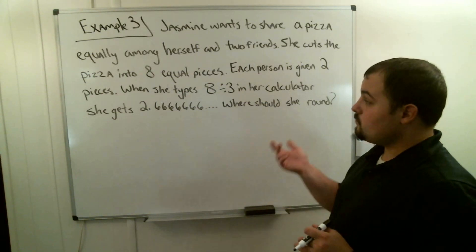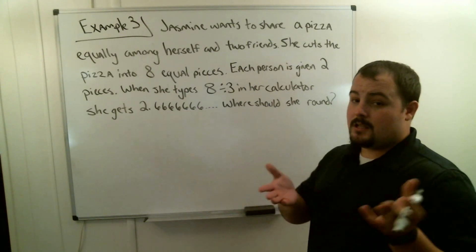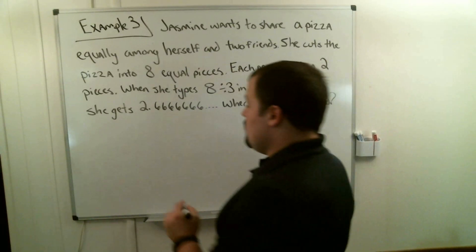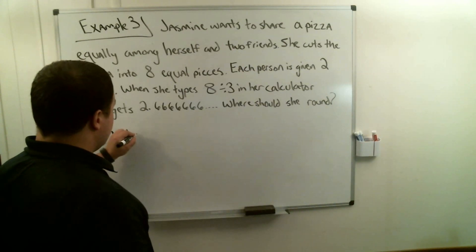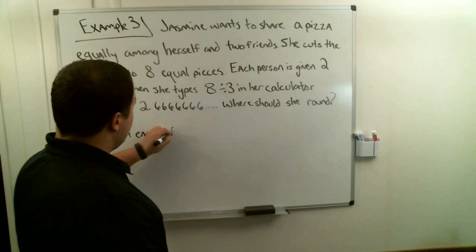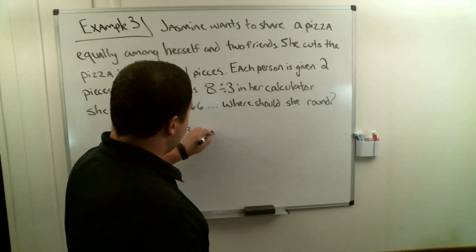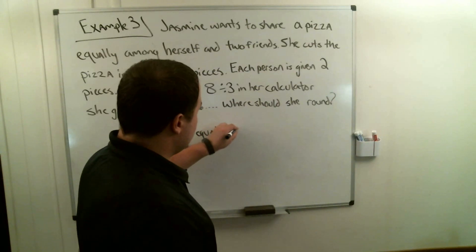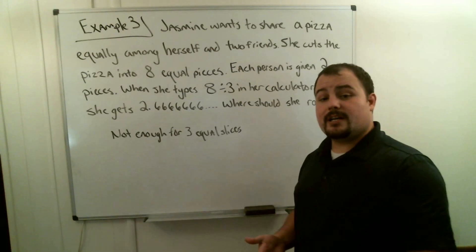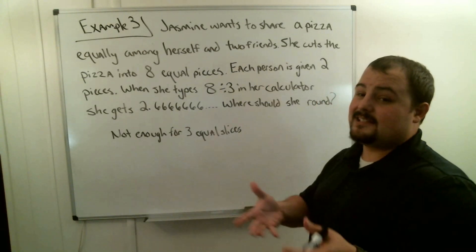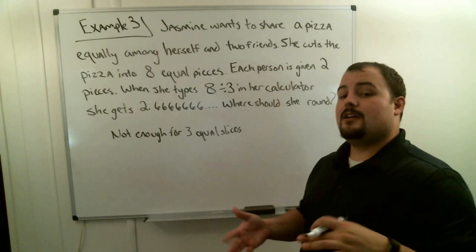If she rounded up to three slices each, would she have enough pizza? No. There's not enough for three equal slices because three times three is nine, and she only made eight slices. So what we want to do is look at giving everybody two slices: two times three is six, leaving two slices remaining. What should she do with those last two pieces of pizza?